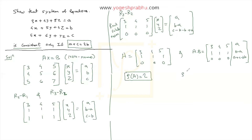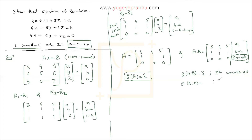Now let's find the rank of the augmented matrix [A|b]. Its rank will be 3 if a + c − 2b ≠ 0, because the third row becomes non-zero. If a + c − 2b = 0, the third row is all zeros and rank of [A|b] equals 2.